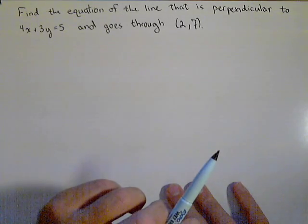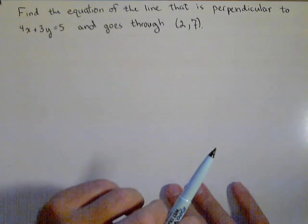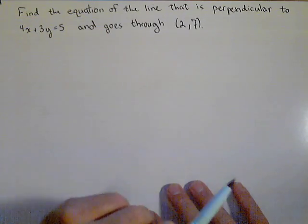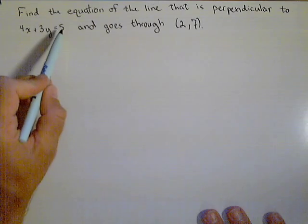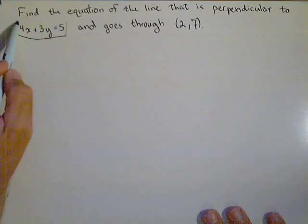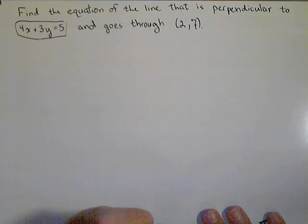When two lines are perpendicular, we know something about their slopes. They're what are called negative reciprocals or opposite reciprocals. So what we need is the slope of this first line, and we can find the slope of the line we're looking for.